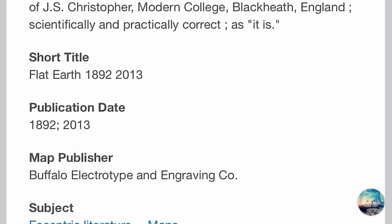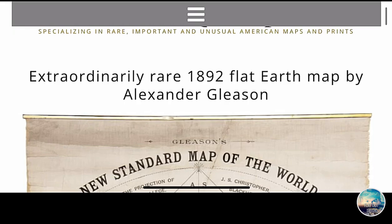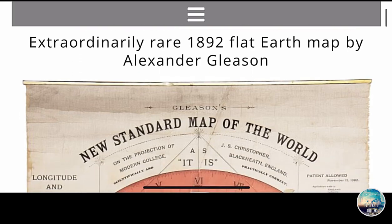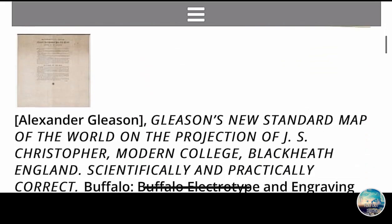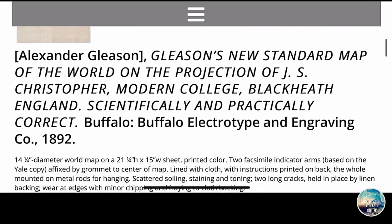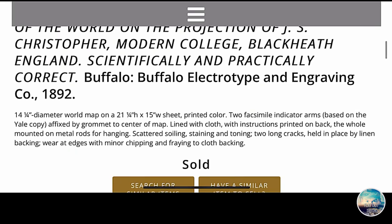Now, being that this specific map that I have is from the Boston Public Library, let's go to Boston's rare maps and see what they say about Gleason himself and J.S. Christopher — the man who made the map. It says: Extraordinary Rare 1892 Flat Earth Map by Alexander Gleason. Let's stroll down and see the details behind the map, the story behind the map.